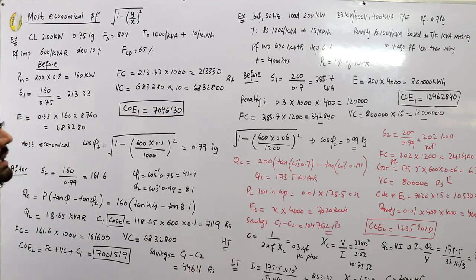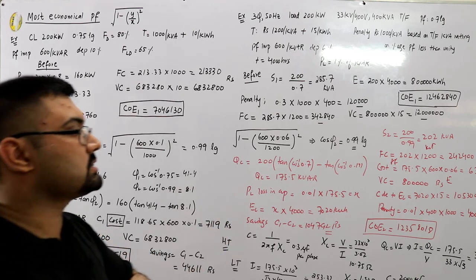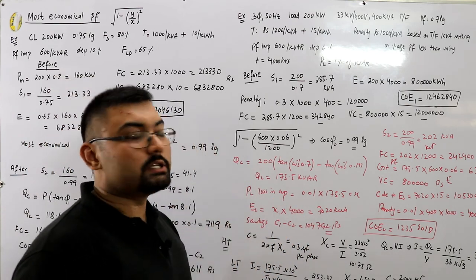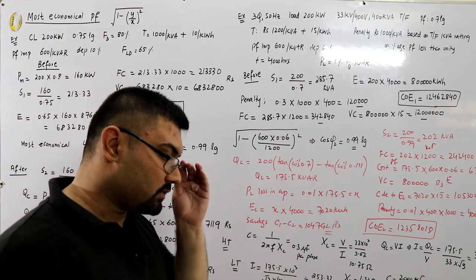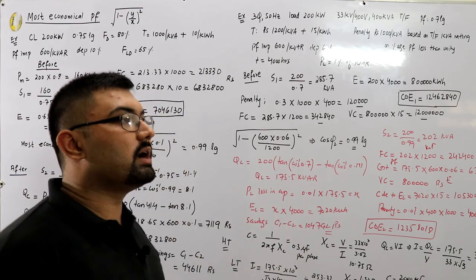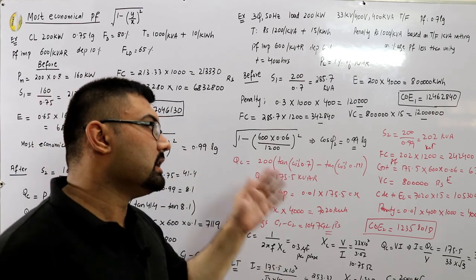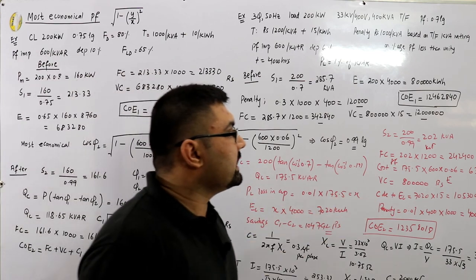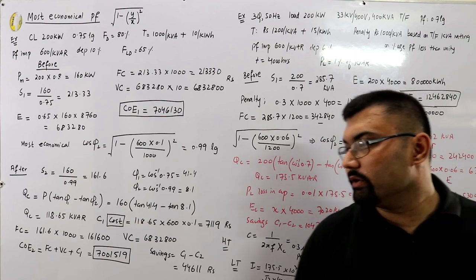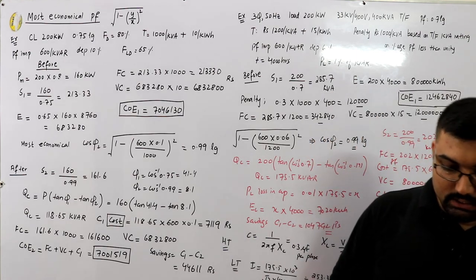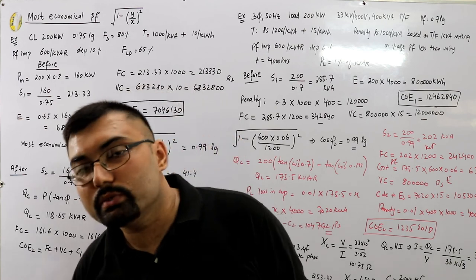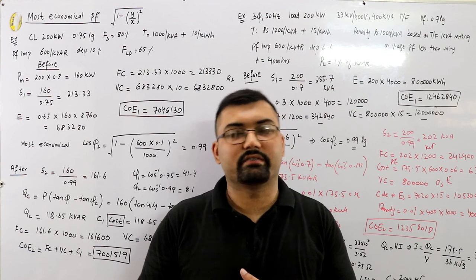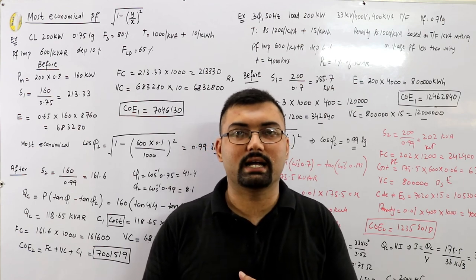To summarize: find the most economical power factor, then compute the fixed cost based on kVA rating, variable cost based on energy requirement, add the cost of the power factor improvement device, and include any penalties or energy losses in the capacitance. This is the economic analysis. I'll see you in the next video where we'll cover examples from the book. Take care, subscribe to the channel, goodbye.